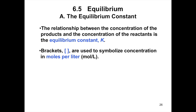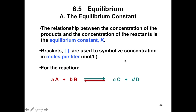Brackets are used to symbolize the concentration in moles per liter, or molarity. Consider the following general reaction where A and B represent the reactants while C and D represent the products, and the small letters a, b, c, and d represent the coefficients in the balanced chemical equation. Remember, to determine the equilibrium constant, we still have to have the balanced equation.